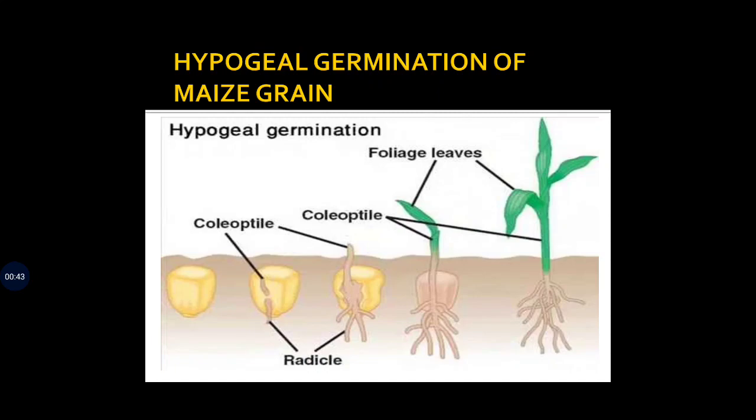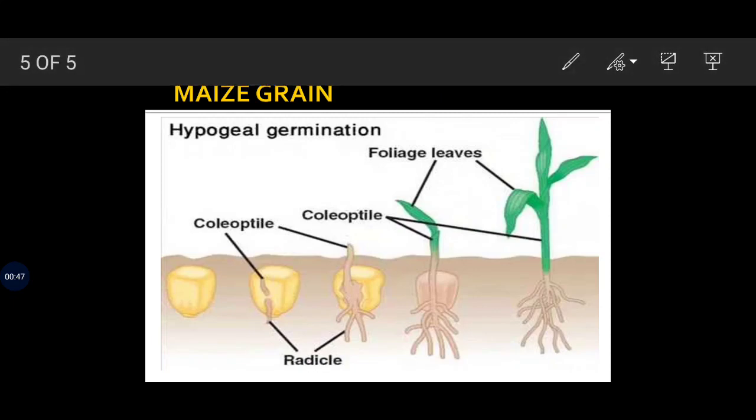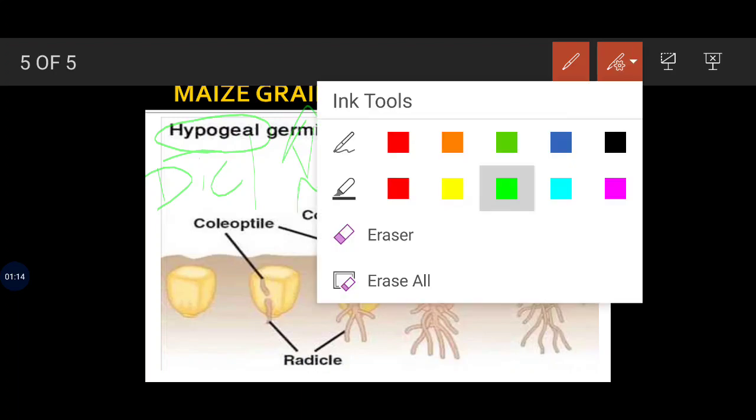Note down students - we are now seeing hypogeal germination in maize grain. The pattern will be the same, since it is hypogeal, meaning the epicotyl will elongate. But the difference is that pea seed was dicot and this one is monocot.